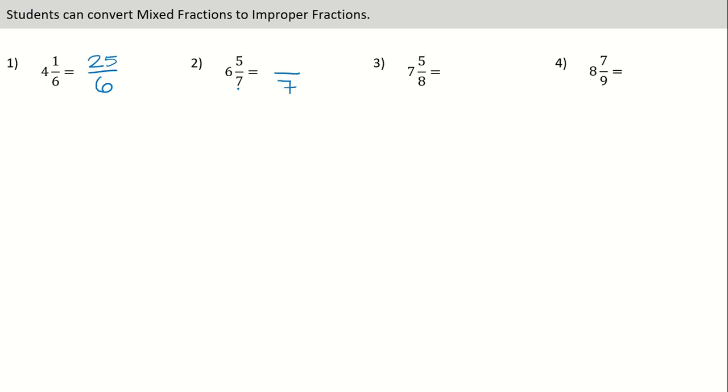Same denominator. Multiply these two numbers. 7 times 6 is 42. Plus 5 is 47.